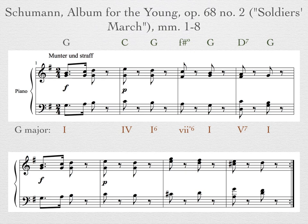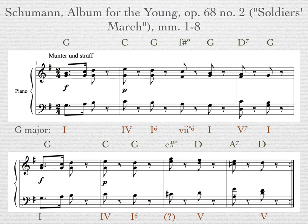Let's look at the second system. Here are the jazz chords. The phrase begins the same as the first system, but the harmonies in measures 7 and 8 are different. Think about what Roman numerals we could label these chords. Ignore the C sharp diminished for now — that will be the topic of our next video. Focus on the A major-minor 7th chord in the last measure. Did you say II7?